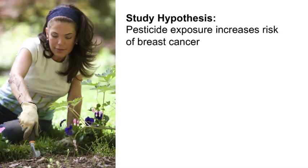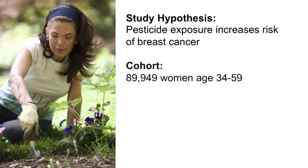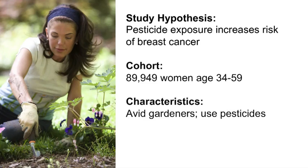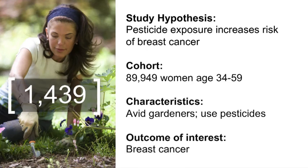Let's examine the advantages and disadvantages of a cohort study versus a case control study. Consider a hypothetical study designed to learn whether pesticide exposure increases the risk of breast cancer. Imagine a prospective cohort of 89,949 women ages 34 to 59 who are avid gardeners. Blood samples are taken from all 89,000 women at the beginning of follow-up and then frozen, used to determine pesticide levels present in the blood. Over eight years of follow-up, 1,439 breast cancer cases were identified.